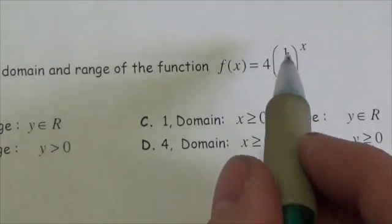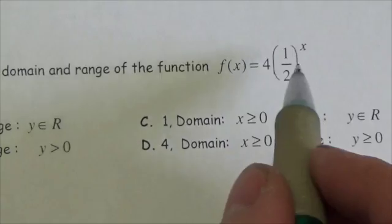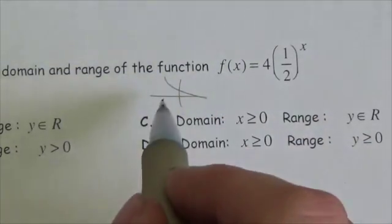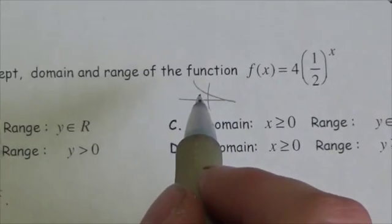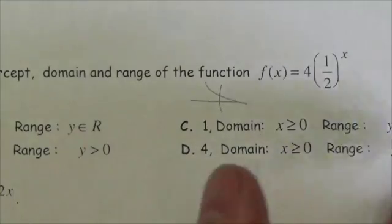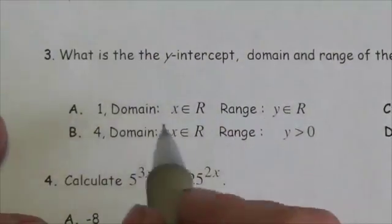This is an exponential function. The base is between zero and one, so we know this is going to be decreasing. With an exponential function, whether it's increasing or decreasing, the domain is going to be all reals and the range is going to be greater than or equal to zero.